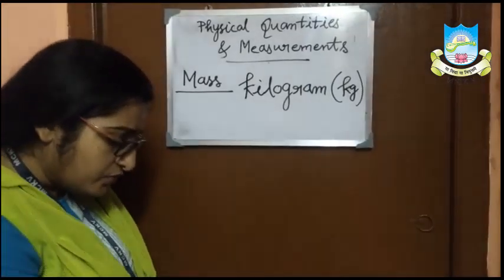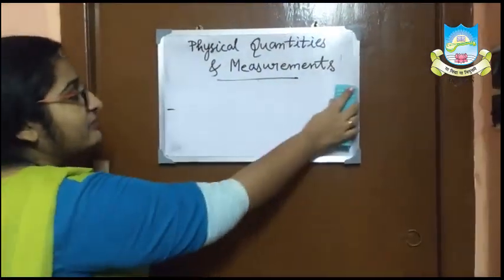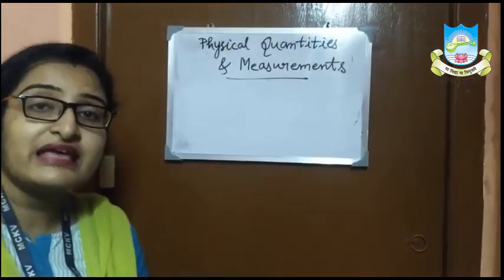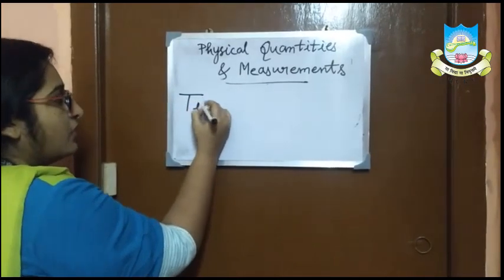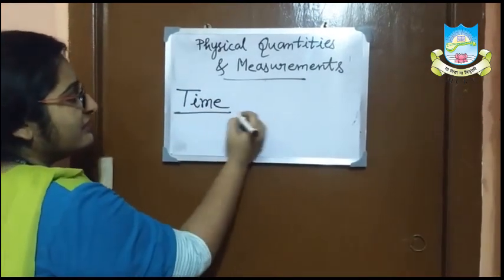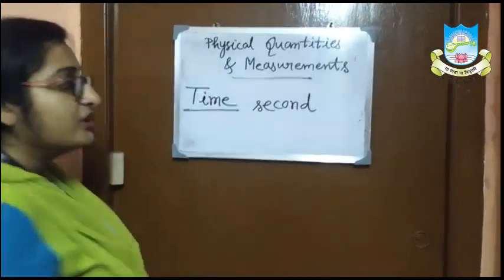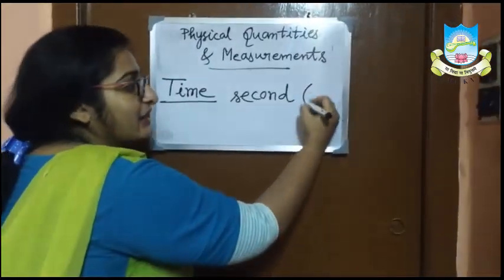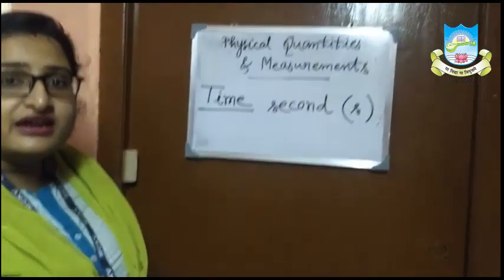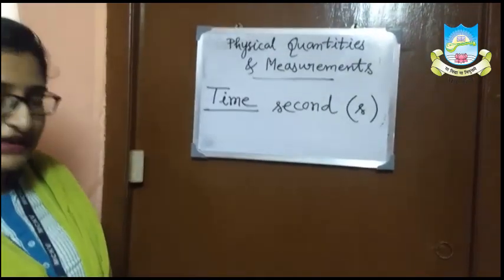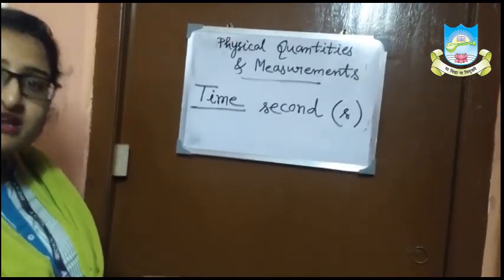Now we will discuss about time. Time is the interval between any two events. The SI unit of time is second. The bigger units of second are minutes, hours, years, days, months, etc. And the smaller units are millisecond, microsecond, etc.